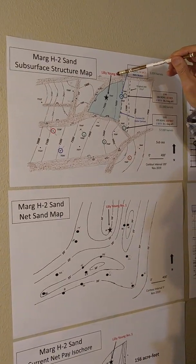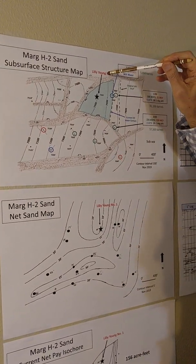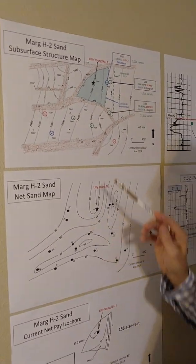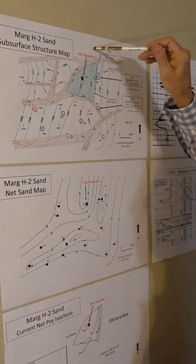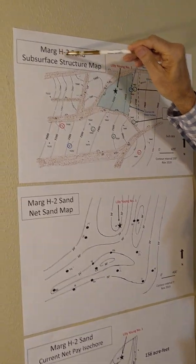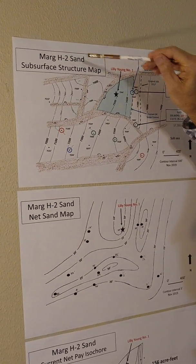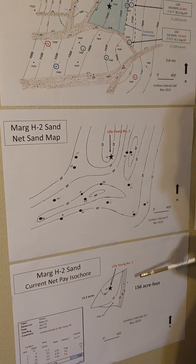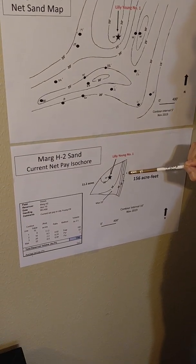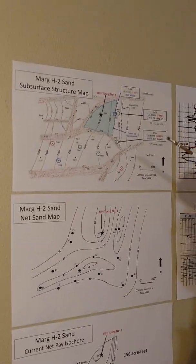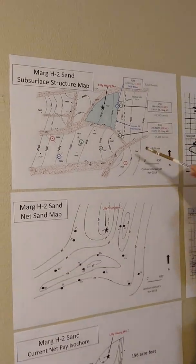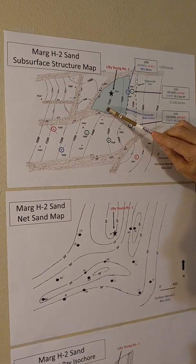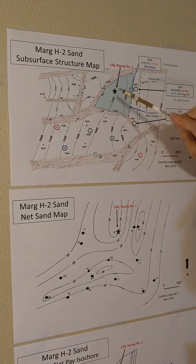The prospect well is the Lilly Young number one. It's shown here in this black star. Now I'm going to show you three geologic maps: a subsurface structure map of the target reservoir that we're going to be producing, the Marge H2, a net sand map, and then a current net pay isochore map. So let's look at the structure map. This is the fault block that we're interested in, that we have colored in green because we're expecting oil there.